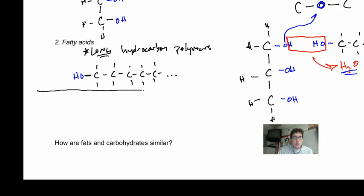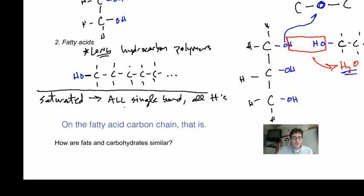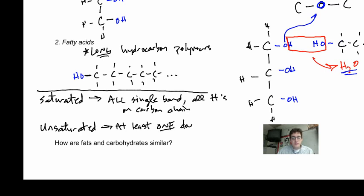One last thing about the fatty acids: we can have saturated fats, which are all single bonds with all hydrogens on the carbon chain, and unsaturated fats, which have at least one double bond. Saturated fats are animal fat, solid like butter. Unsaturated are vegetable fat like oil.